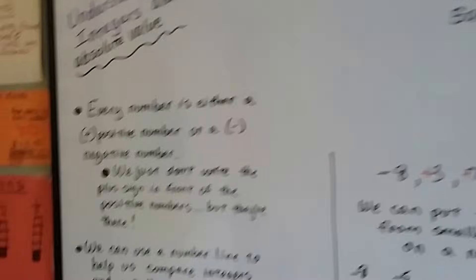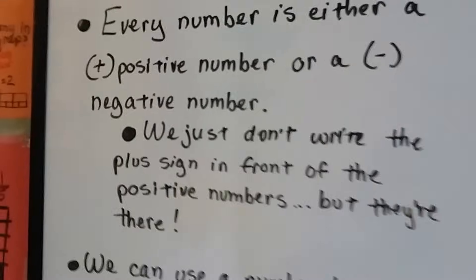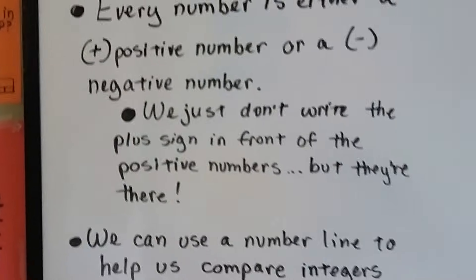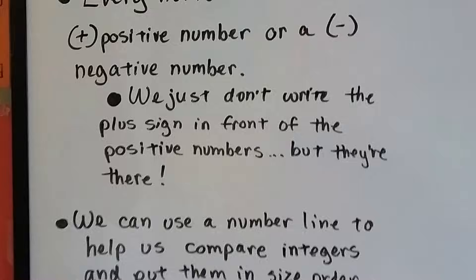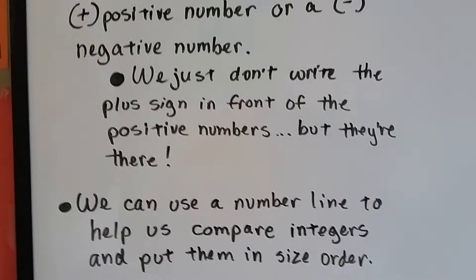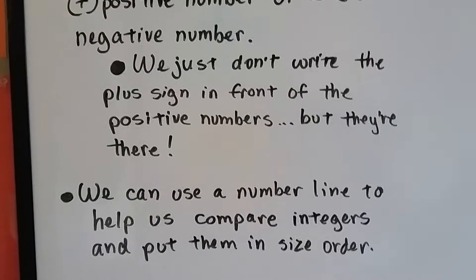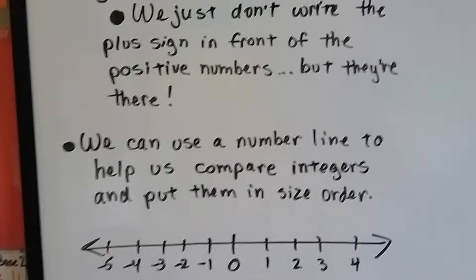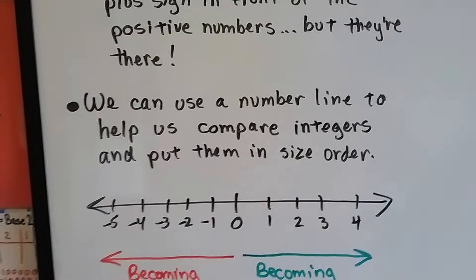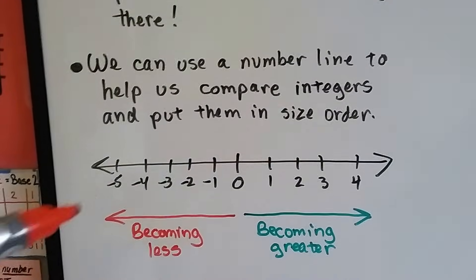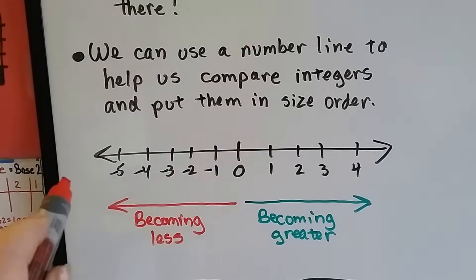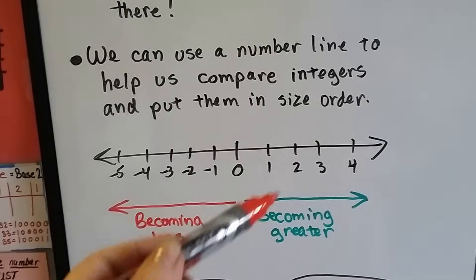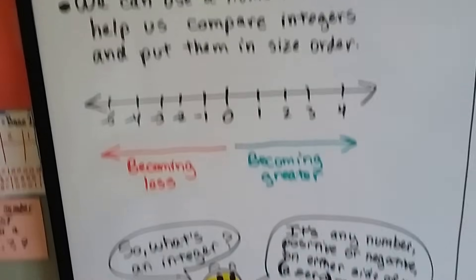Every number is either a positive number or a negative number. We just don't write the plus sign in front of positive numbers — they're there, though; they're invisible. We can use a number line to help us compare integers and put them in size order. As we move to the left, they become smaller and less, and as we move to the right, they become greater and more.